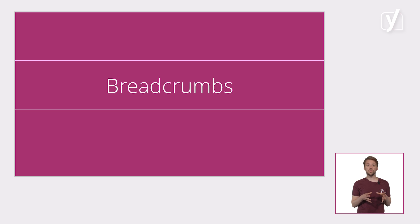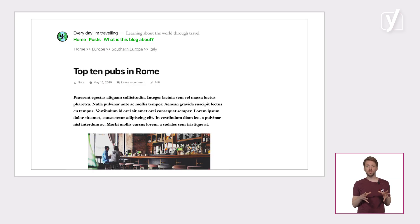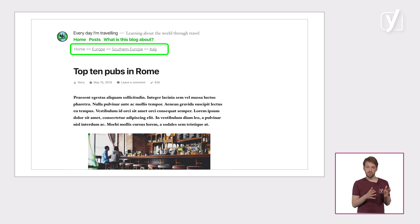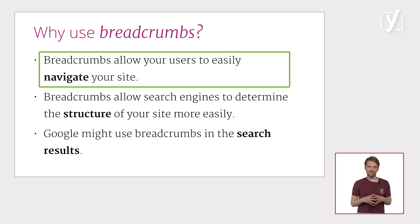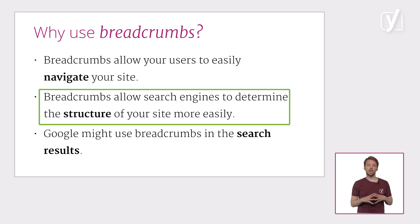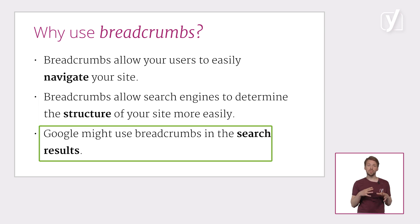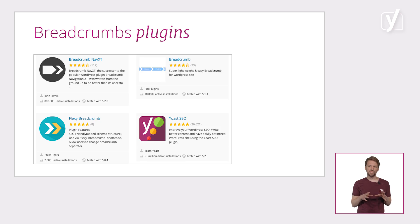The structure of your site can be made even clearer by adding breadcrumbs to your pages. Breadcrumbs are usually visible above the title of your post. They are clickable links that look like this: Home > Europe > Southern Europe > Italy. Breadcrumbs improve both the user experience as well as the SEO of your blog. They show you how the current page fits into the larger structure of your site. Breadcrumbs allow your users to easily navigate your site and help them find their way if they land directly on a page at a lower level of your pyramid, for example via Google. Moreover, they allow search engines to determine the structure of your site more easily. In addition, Google might use breadcrumbs in the search results. Unfortunately, WordPress doesn't offer breadcrumbs functionality out of the box, but adding breadcrumbs is quite easy — you can use one of the many breadcrumbs plugins.